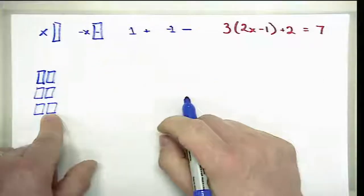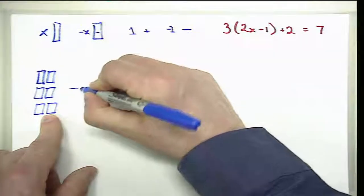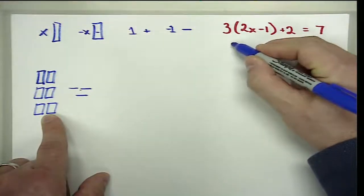In this equation we have 3 times the quantity 2X minus 1 plus 2, and that is equal to 7. We will interpret 3 times 2X minus 1 as three groups of 2X. So there's three groups of 2X and three groups of negative one.